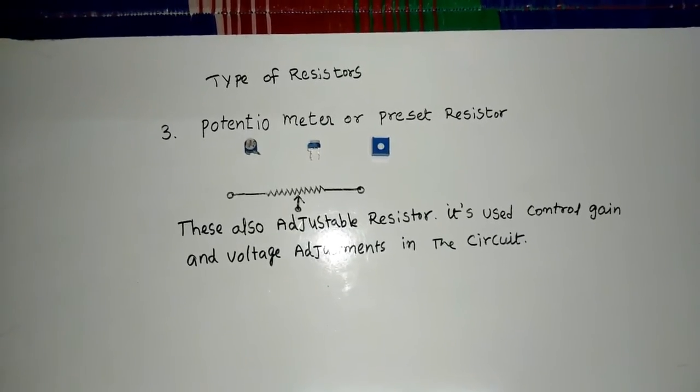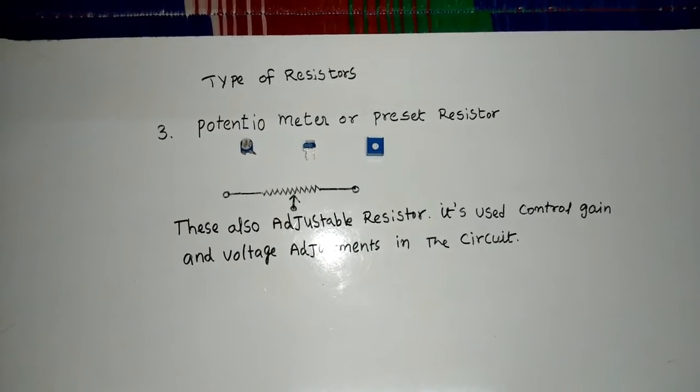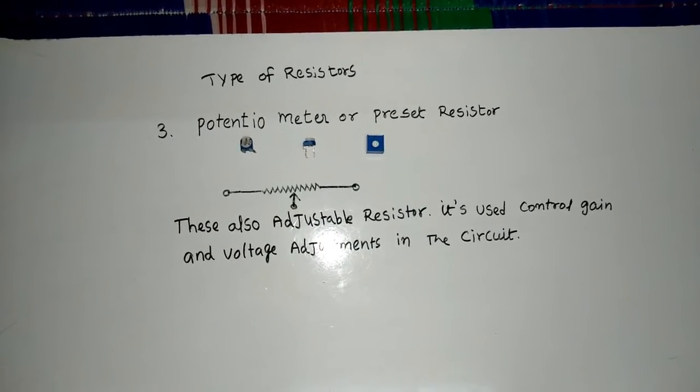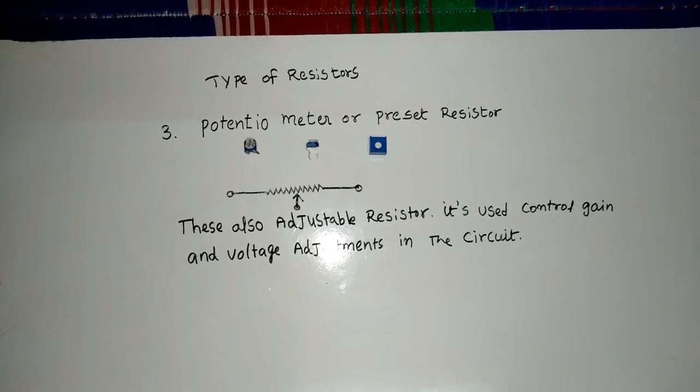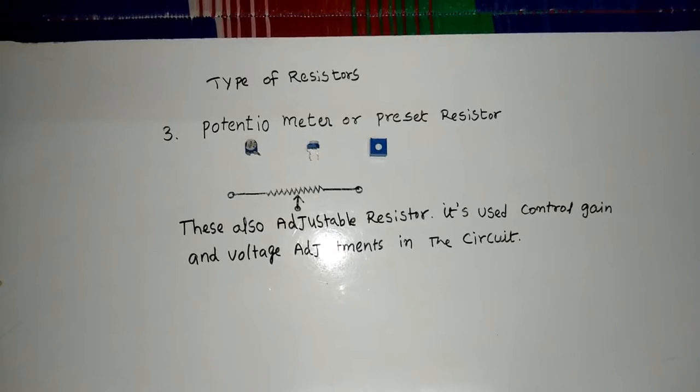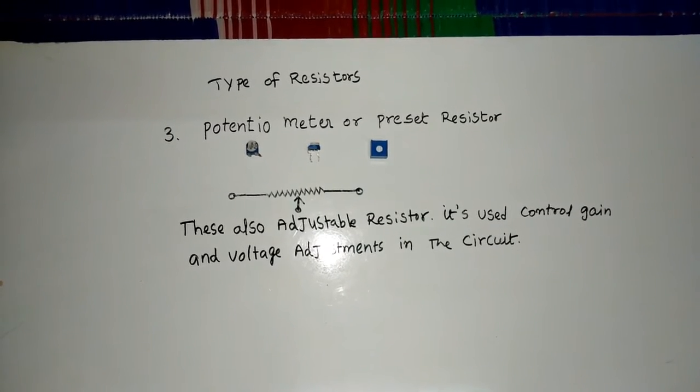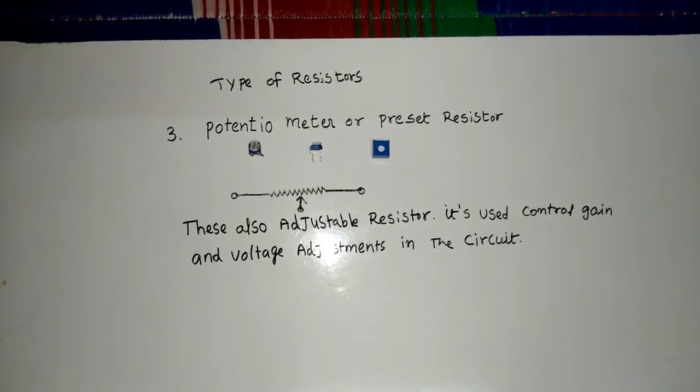Third one: Potentiometer or Preset Resistor. This is also an adjustable resistor. Is used to control gain and voltage adjustments in the circuit.